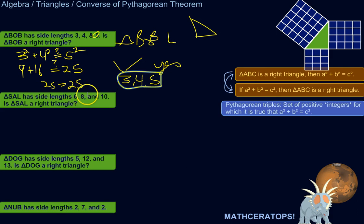Alright. So triangle SAL has side lengths 6, 8, and 10. Is it a right triangle? So 10 is the largest number out of these three, so we'll call that C. So we'll do 6 squared plus 8 squared equals question mark 10 squared. Is that true? 6 squared is 36, 8 squared is 64.